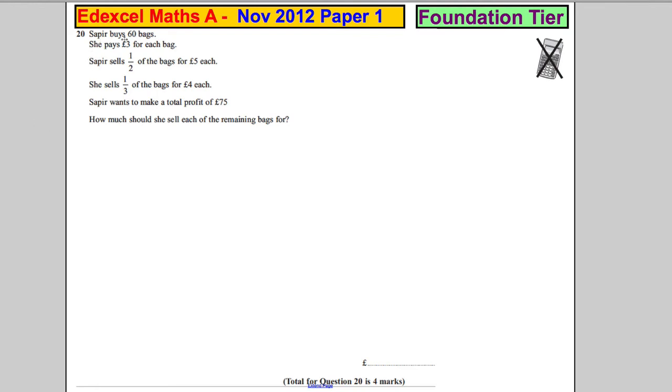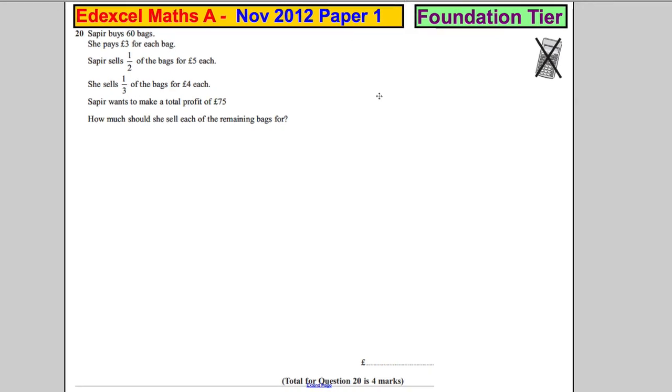All right, question 20. Sapir buys 60 bags. She pays three pounds for each bag. She sells half... Let's just work this out bit by bit. It's a full mark question. We're asked how much she should sell. Let's just break it down.